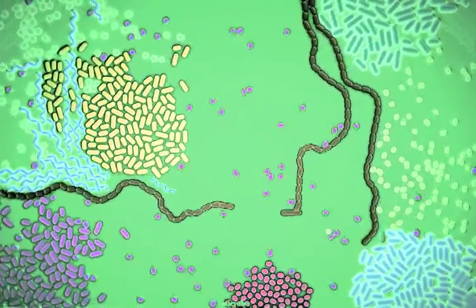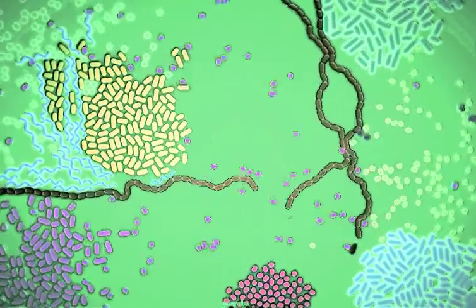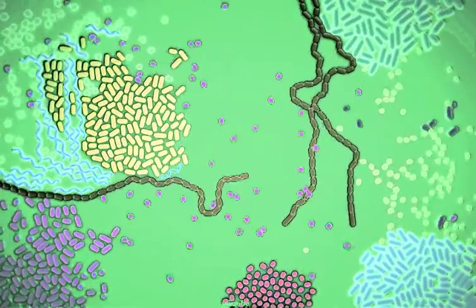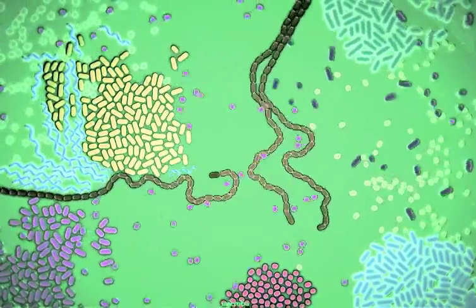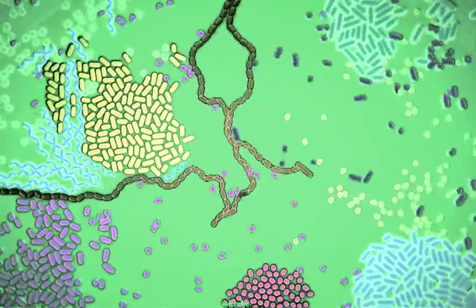When pathogenic bacteria or viruses enter the body, they compete with the microbes that live there, fighting for space and resources. These harmful microbes often use chemical weapons to damage our resident communities.